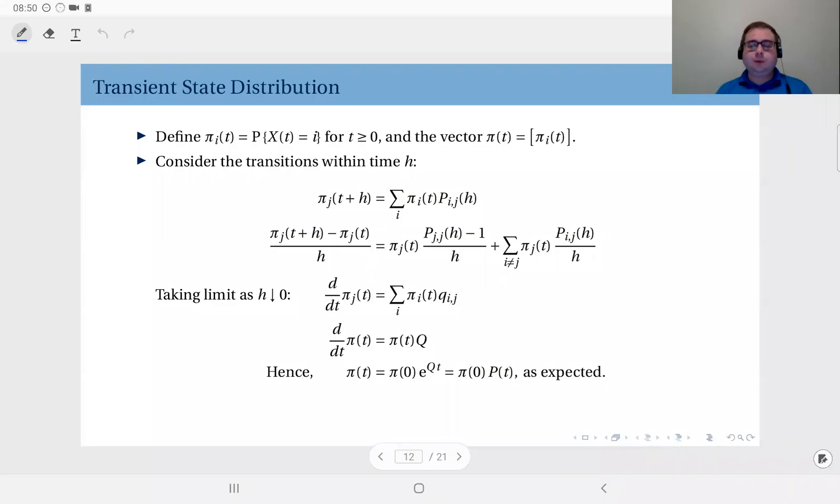Okay, we have seen the relationship between the infinitesimal generator and the state transition probability matrix. So at this time, we are ready to define transient distributions.